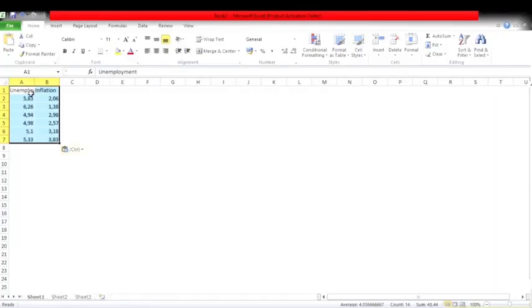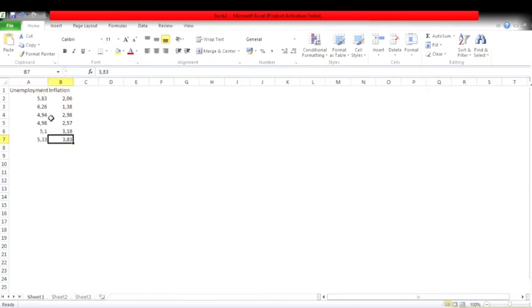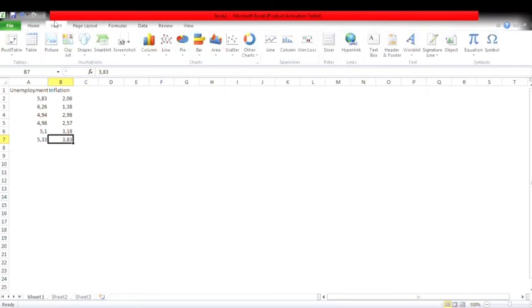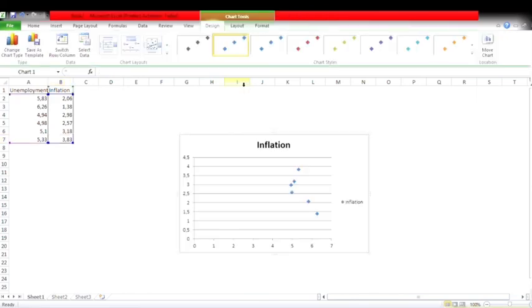So we'll take the data from the previous slide and we will copy it into Microsoft Excel. Make sure the data are correct, and if you can, please double-check one by one. Go to the insert bar and click the scatter one, then it will display automatically on the screen.